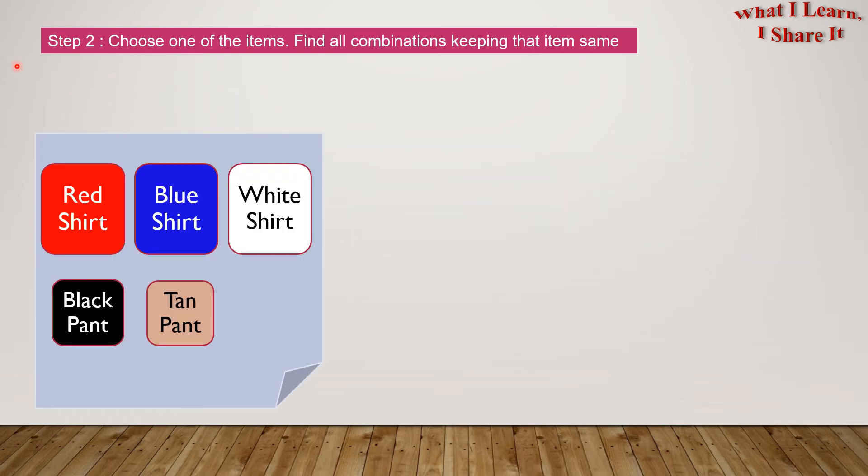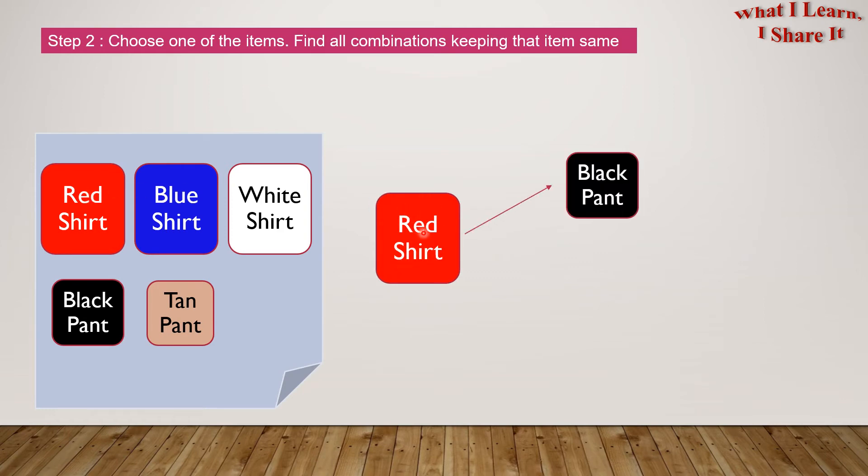Step 2: Choose one of the items. Find all the combinations keeping that item same. So let's start with the red shirt. The red shirt goes with the black pant and with the tan pant.